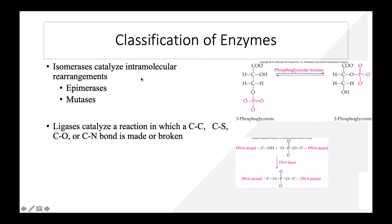Isomerases convert a molecule from one isomer to another — they facilitate intramolecular rearrangement in which bonds are broken and formed. Examples include isomerases, epimerases, and mutases. For example, glucose isomerase converts glucose into fructose. Phosphoglycerate mutase moves the phospho group from the third carbon position (3-phosphoglycerate) to the second carbon (2-phosphoglycerate).